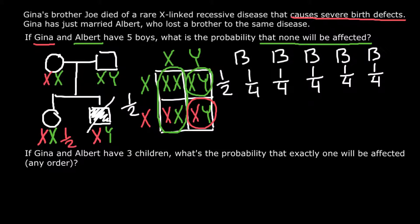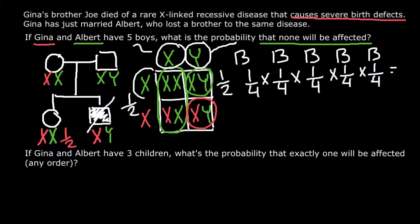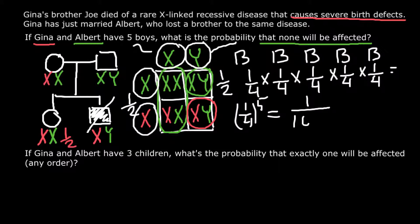Our question is: what is the probability that all five boys would be unaffected? The probability is one quarter for each boy to be unaffected. Each pregnancy is an independent event, so we use the rule of multiplication. One quarter raised to the power of five — that is, one quarter multiplied by itself five times — gives us the answer: one chance out of 1024. If you need the answer in percentage form, divide one by 1024.